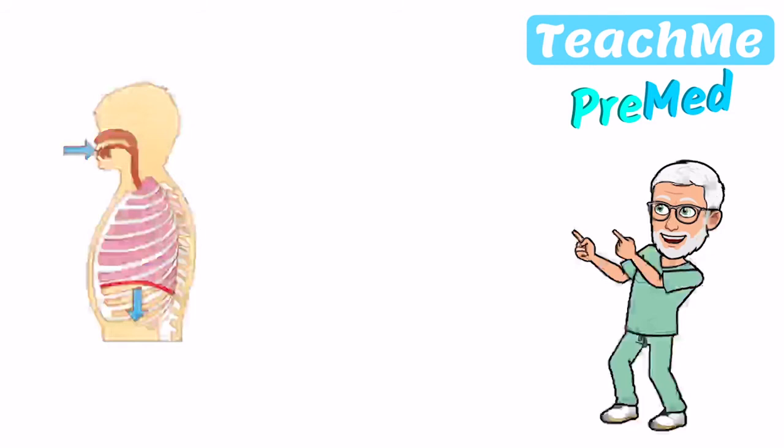When you breathe in, you're generating a negative pressure inside the chest, and so you're allowing the lungs to expand and drag air in, because you're creating a pressure difference between the mouth, which is at a relatively higher pressure, than inside the lung, which is at a relatively lower pressure because you've expanded the chest and flattened the diaphragm. So that draws air in.